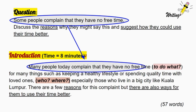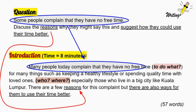In the same sentence, try to answer questions such as: what do they need the free time for, who are they, and where are they from? Next, try to mention what is going to be discussed in the essay — the first being the reasons, and the second being the suggestions.